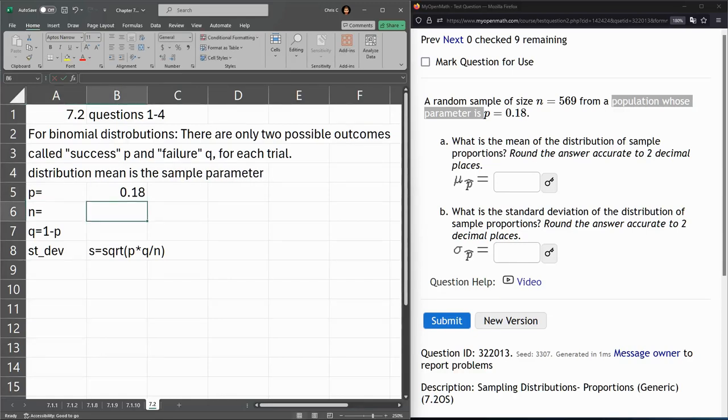n is the number in your sample. And q is 1 minus p. It's the complement or opposite of p. So I'm going to go equals 1 minus b5, enter.